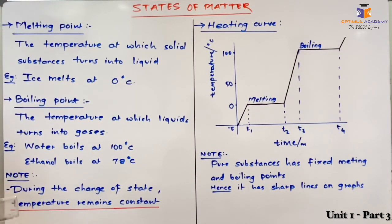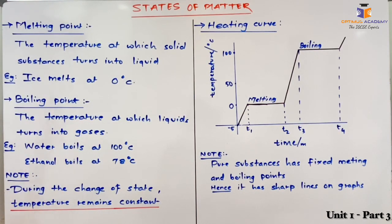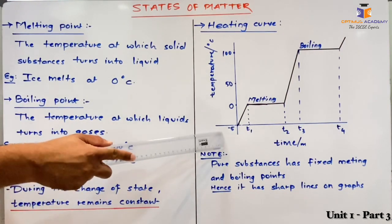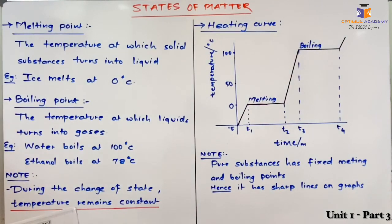To represent these phenomena on a graph, we have a concept called the heating curve, which shows how a substance behaves when we continuously provide heat energy to it. In this graph, time is shown on the x-axis and the temperature of the substance on the y-axis. I have considered the substance ice at the start, so the graph shows ice turning to liquid water and then turning to water vapors. The initial temperature is minus 5 degrees Celsius.